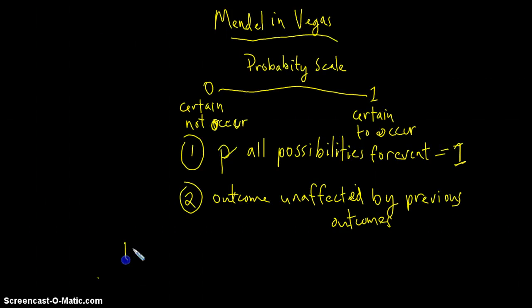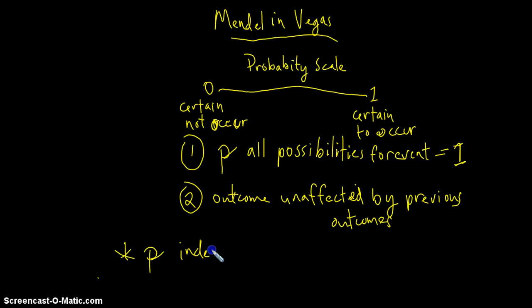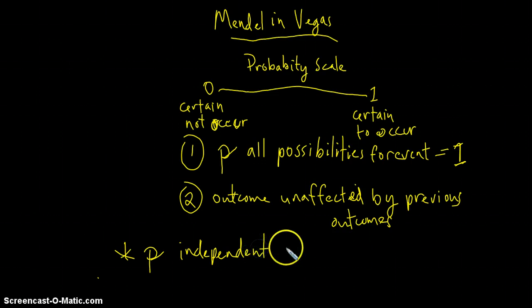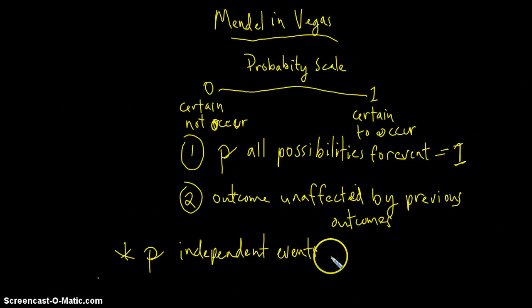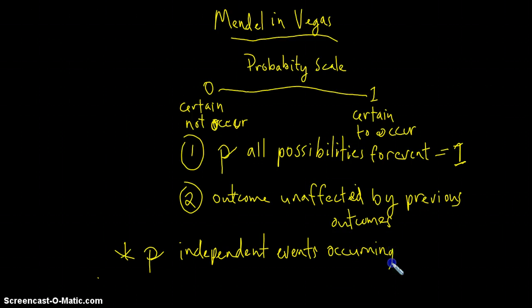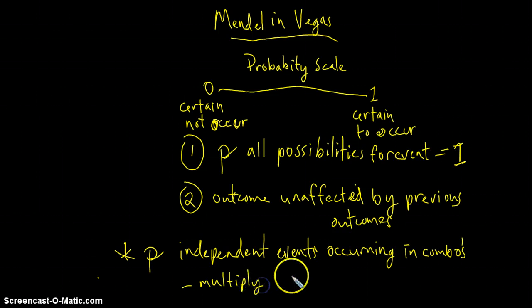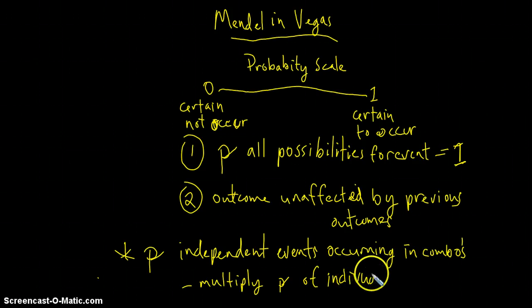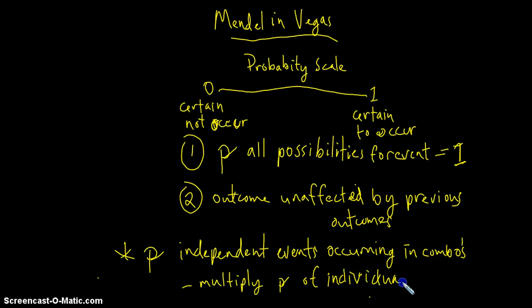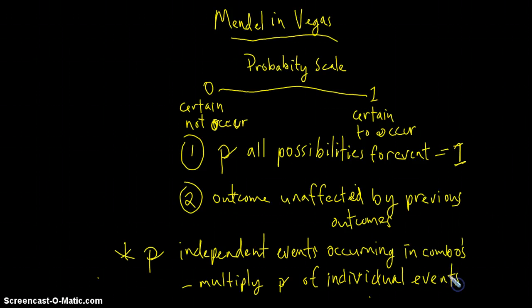What this does is allow us to do some interesting guesswork or predictions. We can look at the probability of independent events like individual coin flips or separation of homologous chromosomes. The probability of independent events occurring in specific combinations can actually be calculated. We do that by multiplying the probability of the individual events.